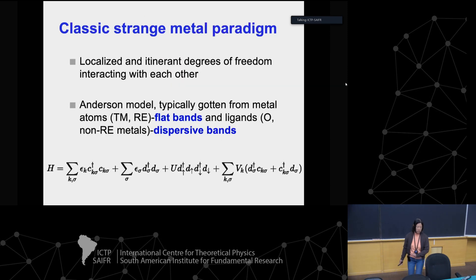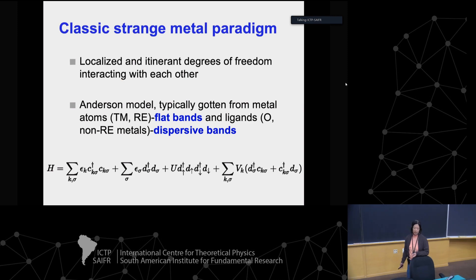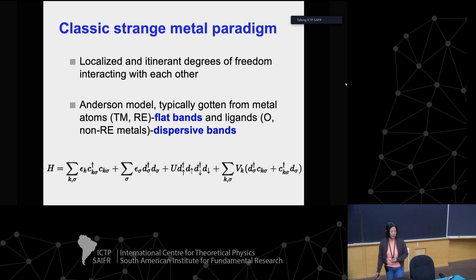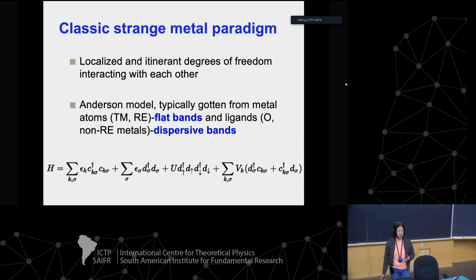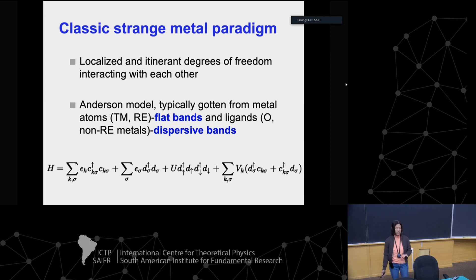There's the classic strange metal paradigm, which people in strongly correlated electron systems have thought about a lot. If you have localized and itinerant degrees of freedom interacting with each other, you can create something new arising from the hybridization of these two different degrees of freedom. You can think about flat bands and dispersive bands interacting with each other, and then a new phenomenon emerging out of that.